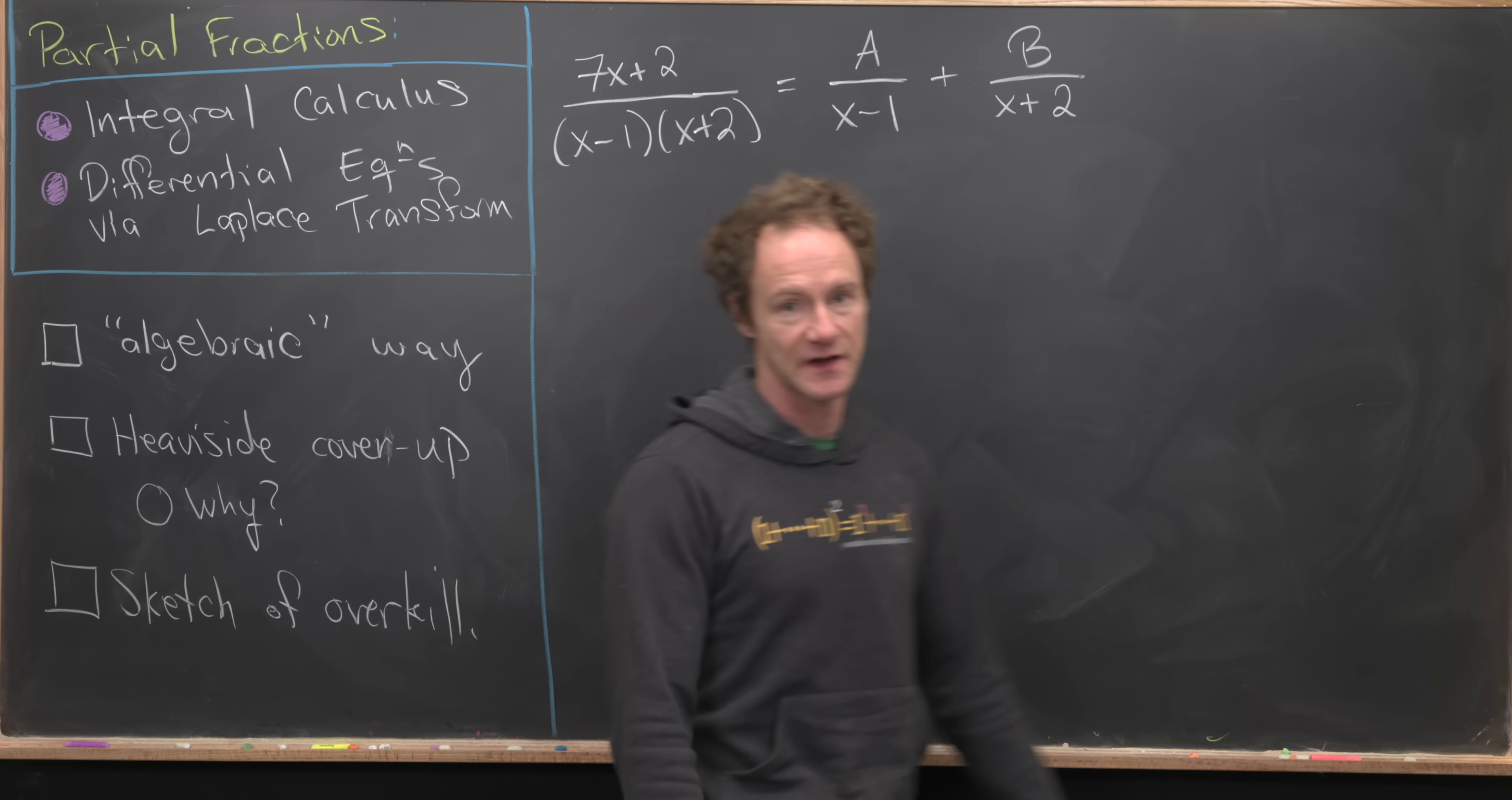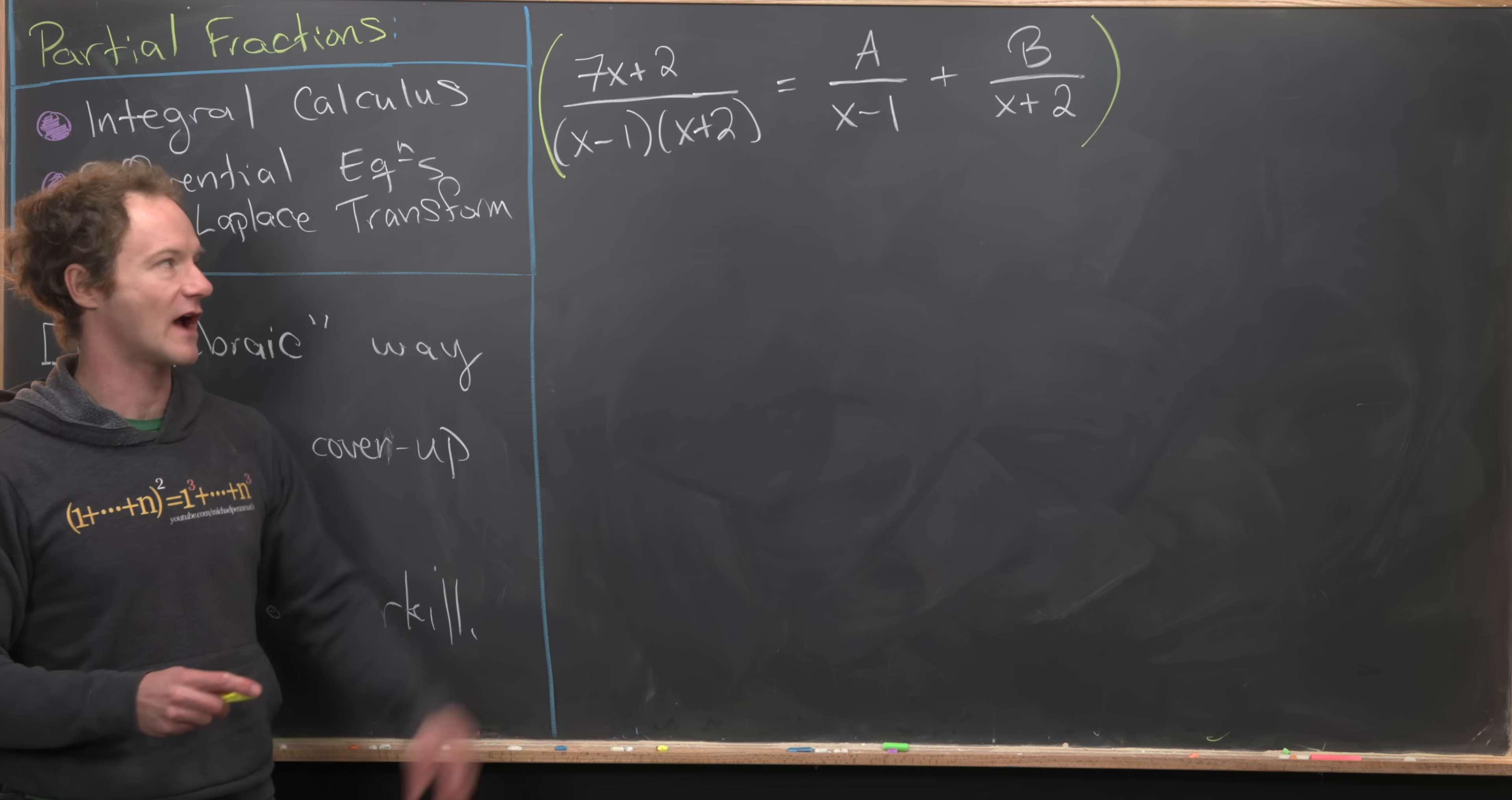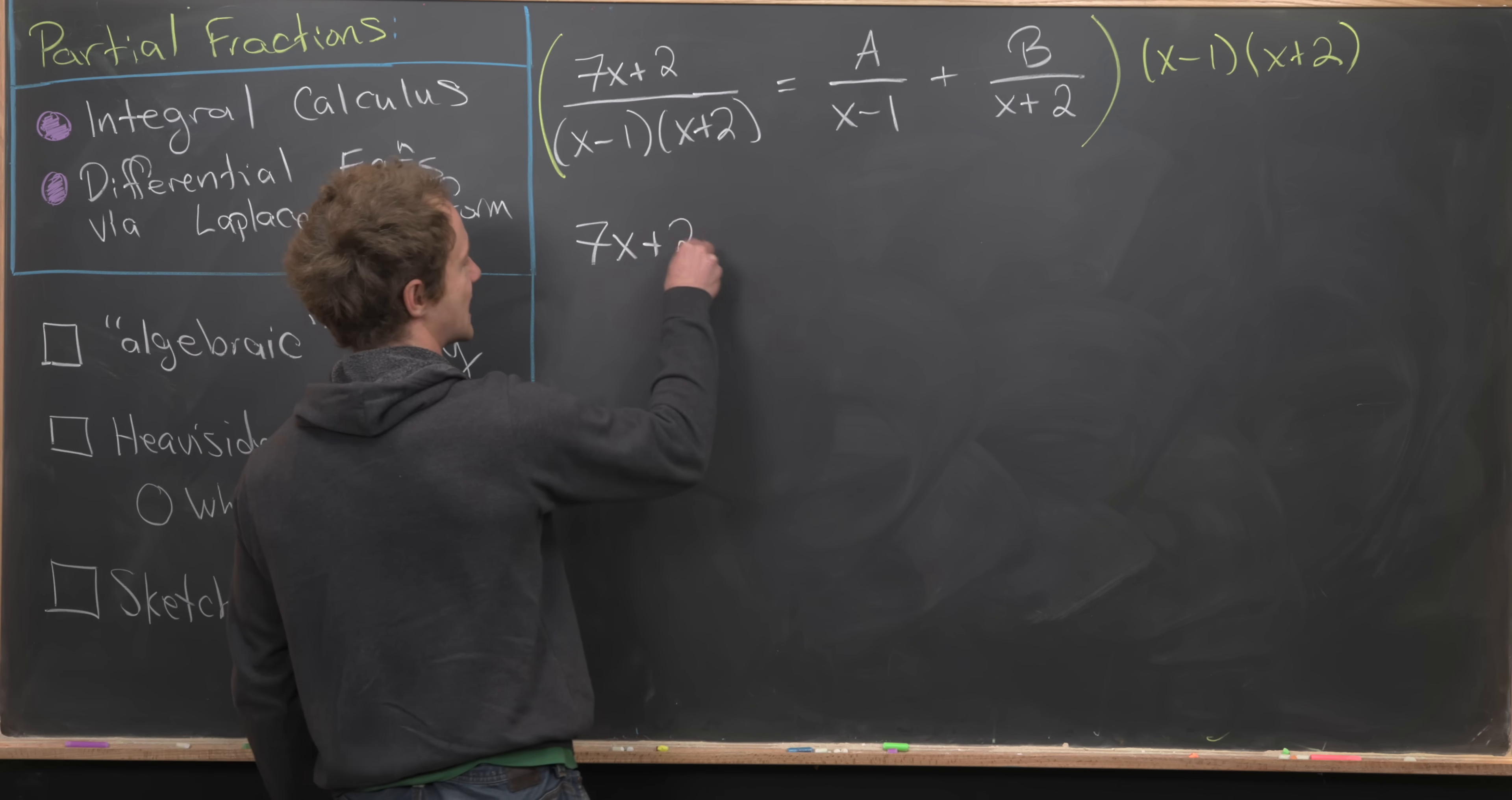Let's first look at the algebraic way. I want to take 7x plus 2 over (x minus 1)(x plus 2) and decompose it as A over (x minus 1) plus B over (x plus 2). My standard method is to take this equation and multiply it so that it is an equation happening among polynomials. I can do that by clearing the denominators, multiplying by (x minus 1)(x plus 2).